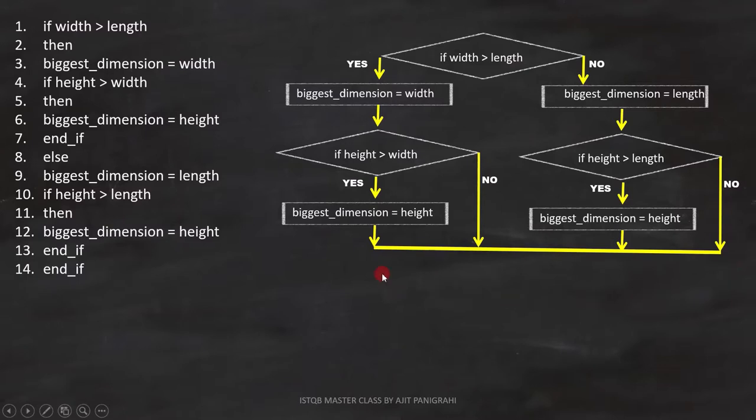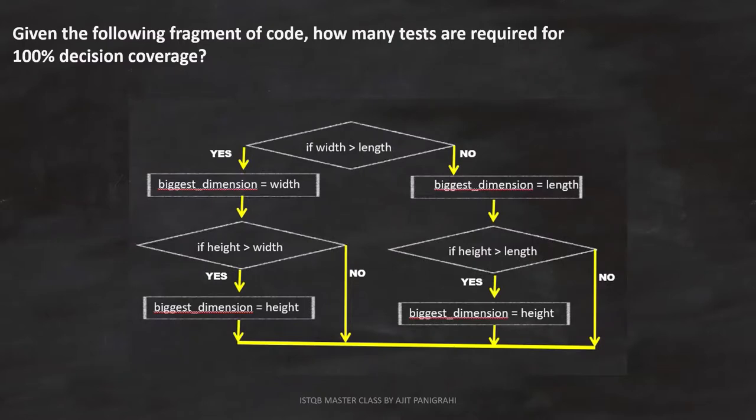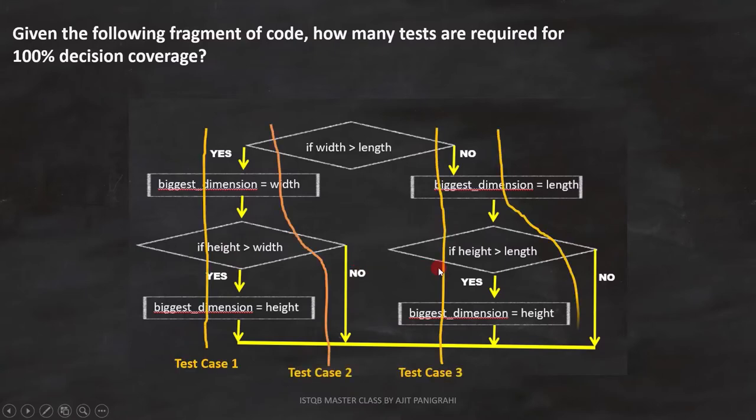Now, using this flowchart, we have to find out how many tests are required for 100% decision coverage. To cover 100% decision coverage, we have to cover both the paths: true path and false path. These are the four test cases we need to cover all the branches.